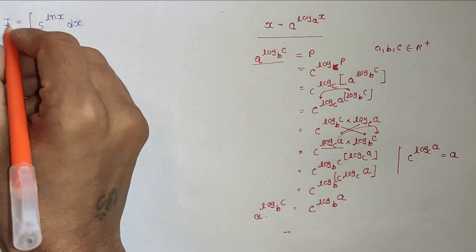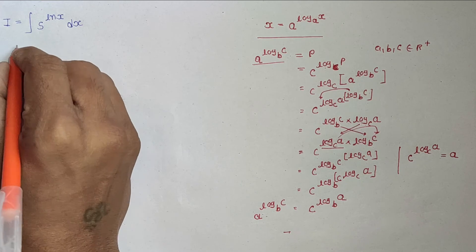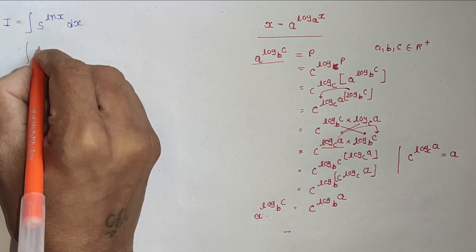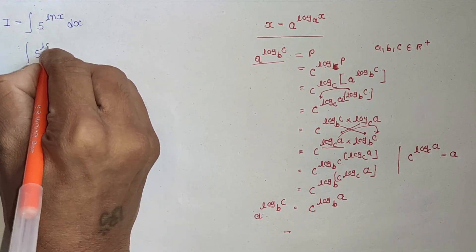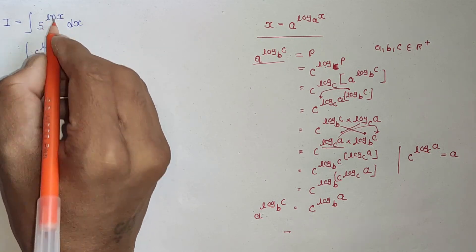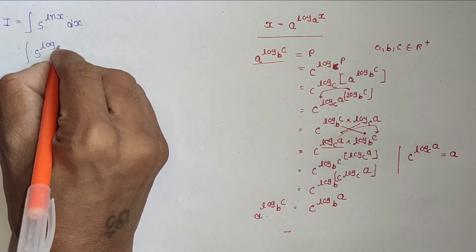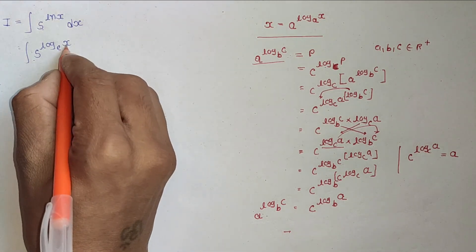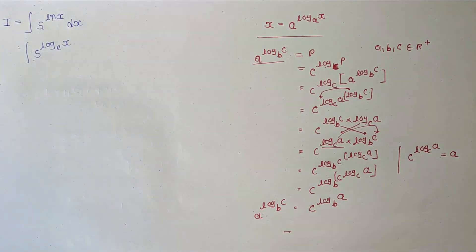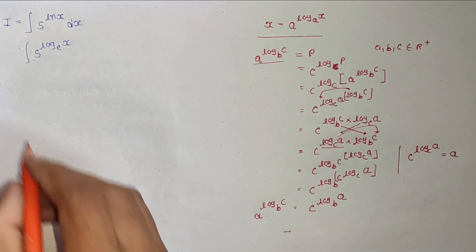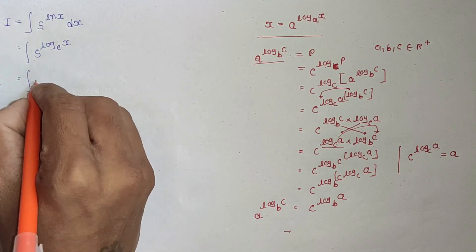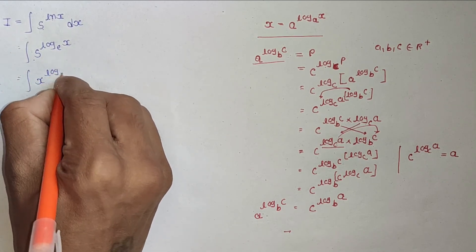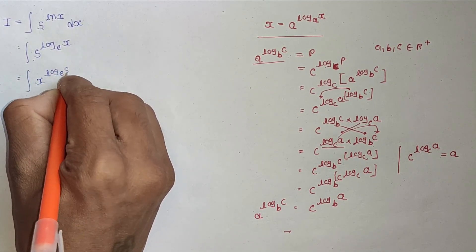Now look at the question: integration of φ^(ln x) dx. Since ln x = log_e x, φ and x can be swapped. So it becomes integration of x^(log_e φ) dx.